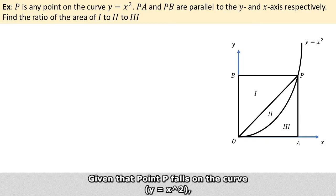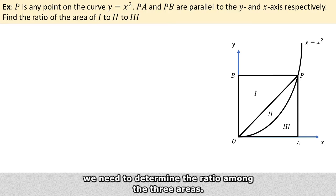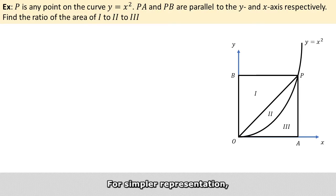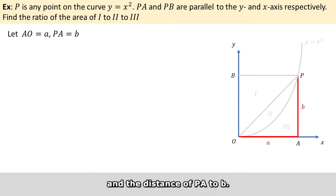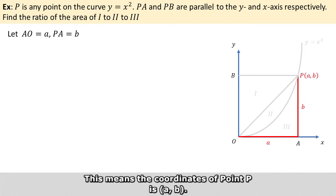Given that point P falls on the curve, we need to determine a ratio among the three areas. For simpler representation, we set the distance AO to a and the distance PA to b. This means the coordinates of point P are (a, b).